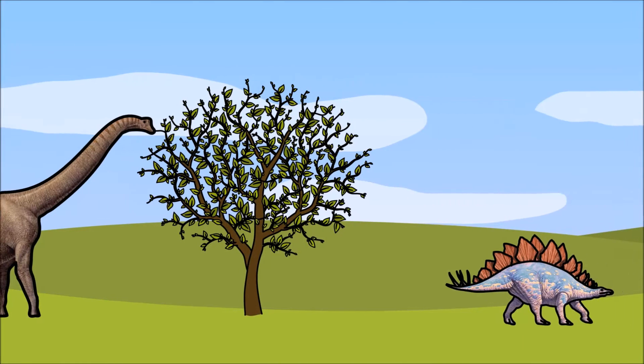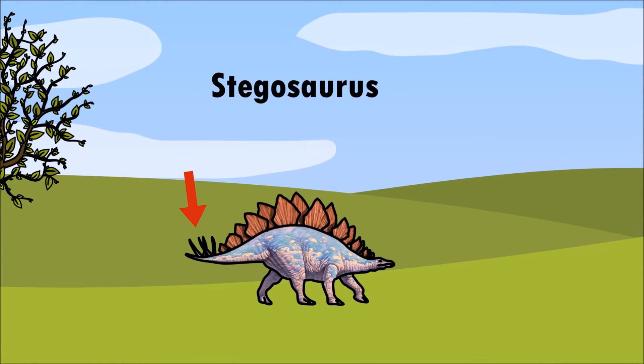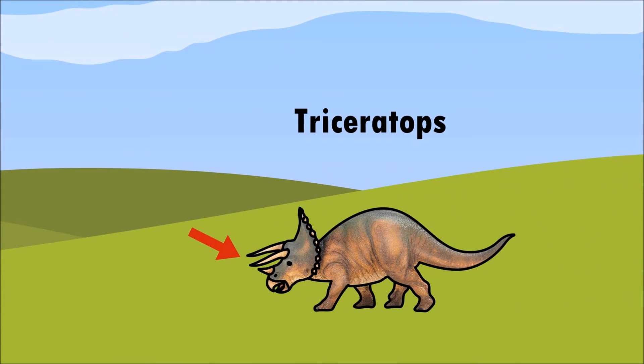In order to protect themselves from the meat-eaters, some herbivores have natural defensive features. For example, the Stegosaurus has spikes on its tail, and the Triceratops has three horns on its head.